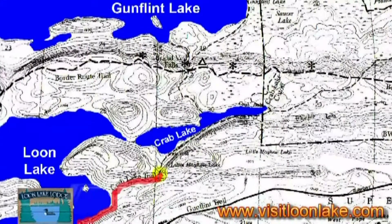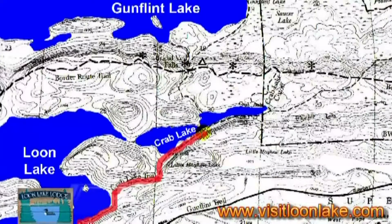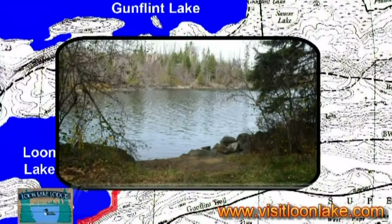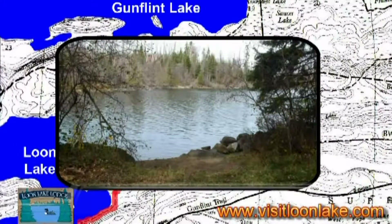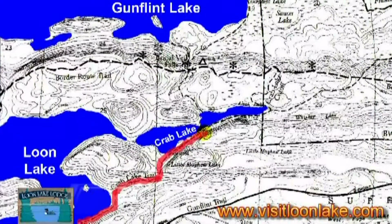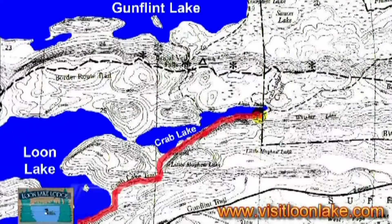Just continue on down the trail. You'll start getting close to Crab Lake, and when you get to Crab Lake Narrows, you'll get a really nice view of Crab Lake. Continue down the trail and you'll come to a sign saying that you're entering the BWCA, the Boundary Waters Canoe Area.